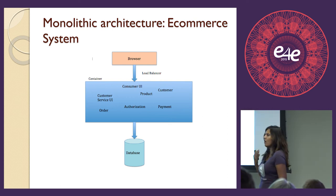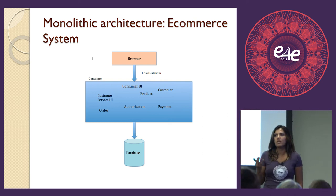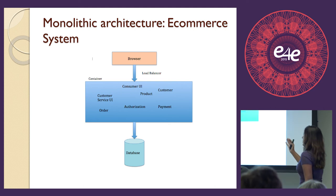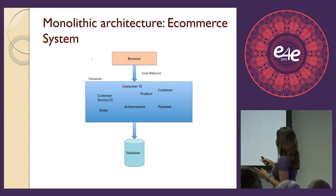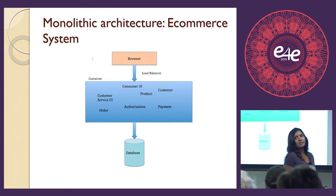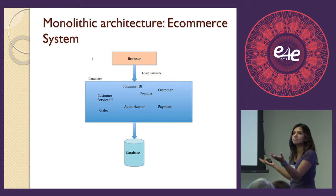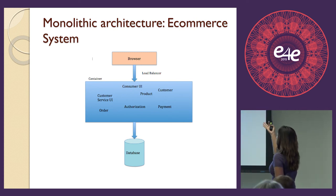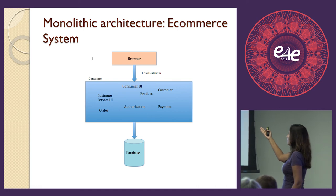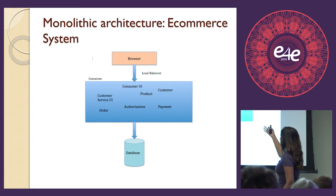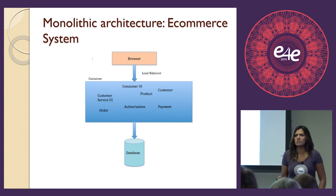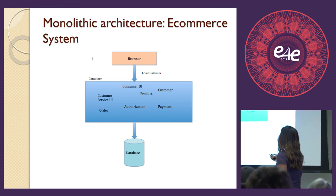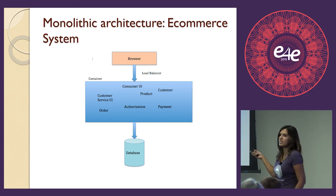That is the typical monolithic architecture. There are three layers mainly — for a long time we always thought application architecture should have three layers: MVC. First is the browser, which makes a call to a load balancer. All your code — product module, customer module, payment module — are all part of one single deployable unit. In Java terms, all these modules are part of one WAR deployed on a container. The browser calls the load balancer, which fans out to different servers, and all these modules talk to a database to serve the request.